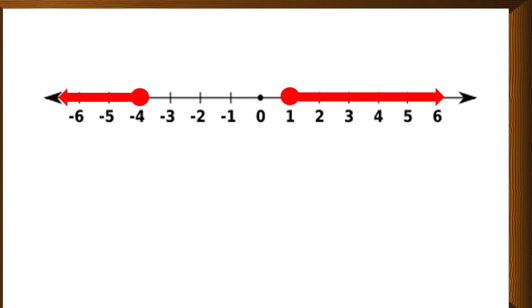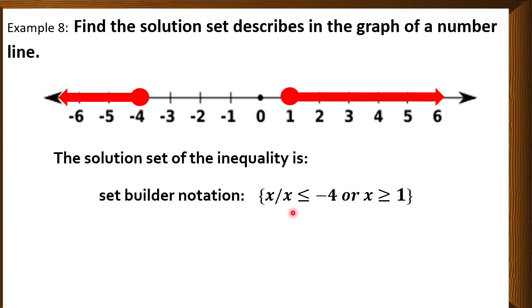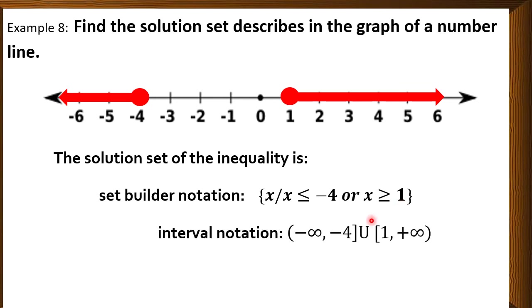Another example: we have a solid circle at negative 4 with the shaded region going to the negative infinity, and a solid circle at 1 going to the positive infinity. For the set builder notation, the values are less than or equal to negative 4, and the values here are greater than or equal to 1. For the interval notation, going to the negative infinity with a bracket up to negative 4 because negative 4 is part of the solution, union 1, then going to positive infinity.